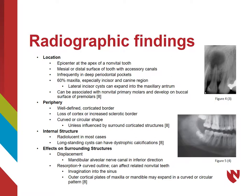The defining radiographic characteristic of radicular cysts is their definition and location. Usually these well-defined radiolucencies are found at the very apex of a non-vital tooth, but occasionally they can also be located on the mesial or distal radicular surface, originating from accessory canals. They are infrequently found in deep periodontal pockets. 60% of radicular cysts are seen in the maxilla, predominantly in the incisor and canine regions. Radicular cysts of the lateral incisors have been shown to expand into the nearby maxillary antrum.